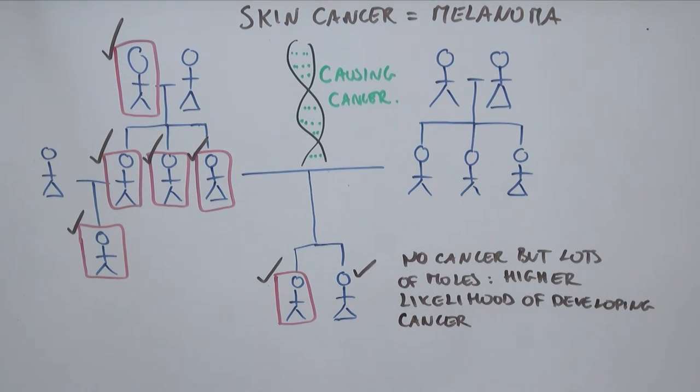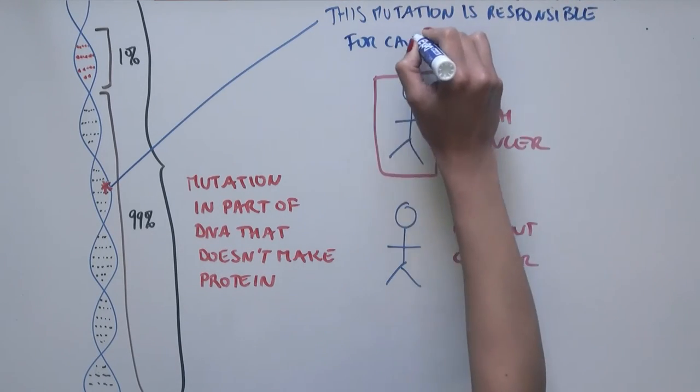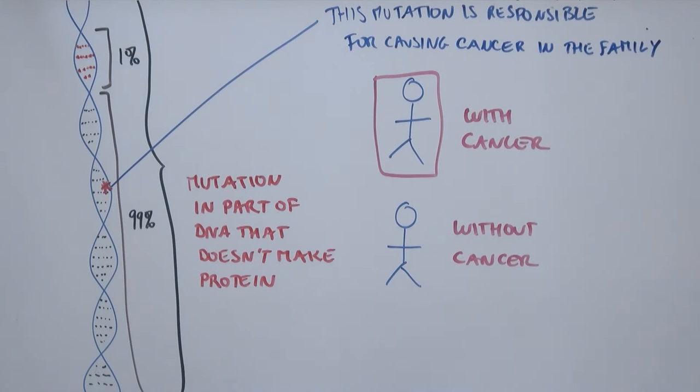Considering the size of the family, this provides strong evidence that this mutation is responsible for causing cancer in the family. So how could this mutation be involved in causing cancer?